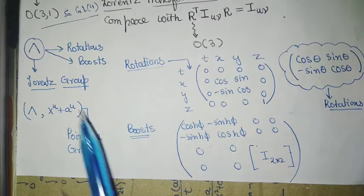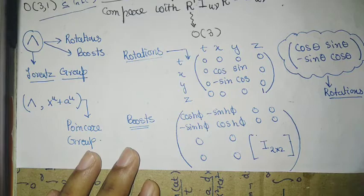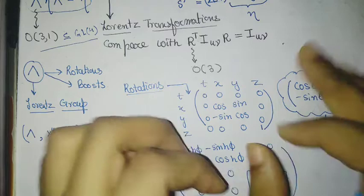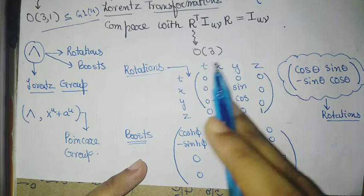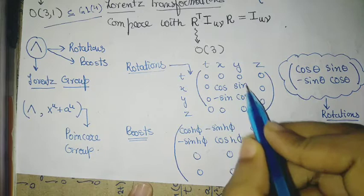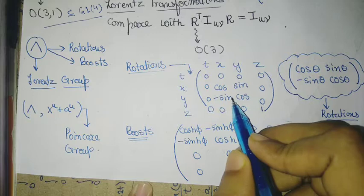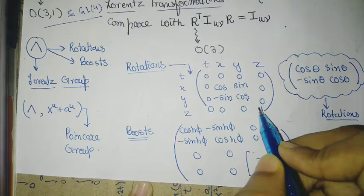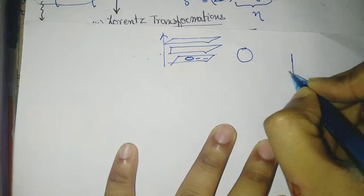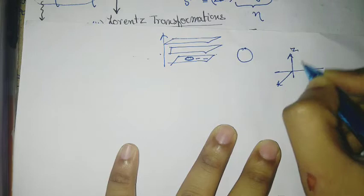Given the Lorentz group, you can form something called the Lorentz algebra — just like in quantum mechanics the angular momentum algebra gives rise to rotations via the exponential map. Similarly the Lorentz group has an algebraic representation. So rotations are generated as: cosine theta, sine theta, minus sine theta, cosine theta. This is a rotation fixed about the z-axis, which rotates the x-y plane.